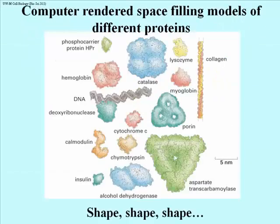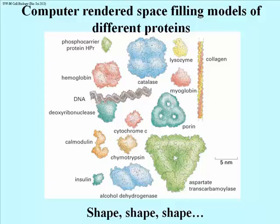All this folding to get secondary structure and then three-dimensional structure leads to many different polypeptides with many exquisitely different shapes. The theme here is shape. These are computer-generated space-filling models, intended to show the space occupied by the structures of polypeptide chains. These are models of real proteins, showing all their names, just to give you an idea of the many different shapes that polypeptides can acquire.